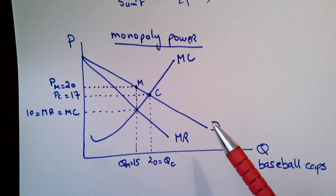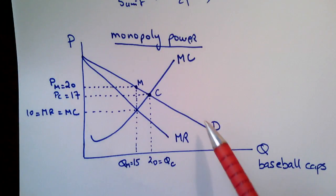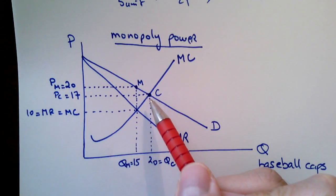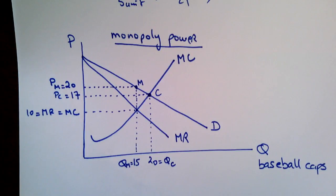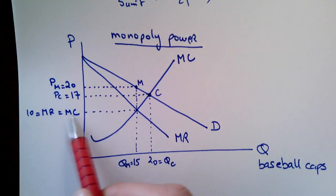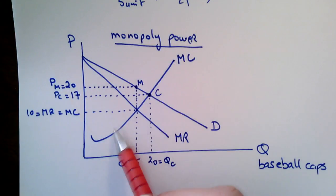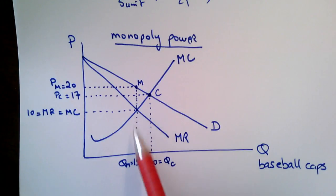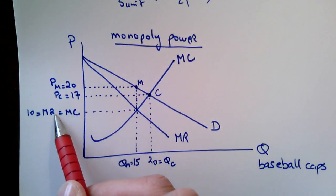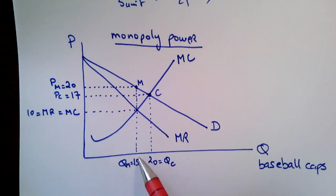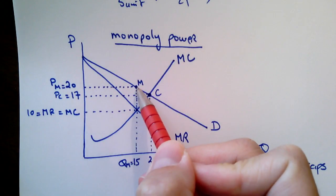The competitive outcome, where demand meets supply at point C, no longer applies since we have only one firm. But if the firm were forced to sell at the competitive price, it would be at point C. Since the firm has monopoly power as the only supplier, to maximize profit we find the level of output where marginal revenue equals marginal cost — where the marginal revenue function intersects the marginal cost function. That gives a profit-maximizing quantity of QM equal to 15, where MC equals $10. The price the firm will charge is PM equal to $20 at point M.